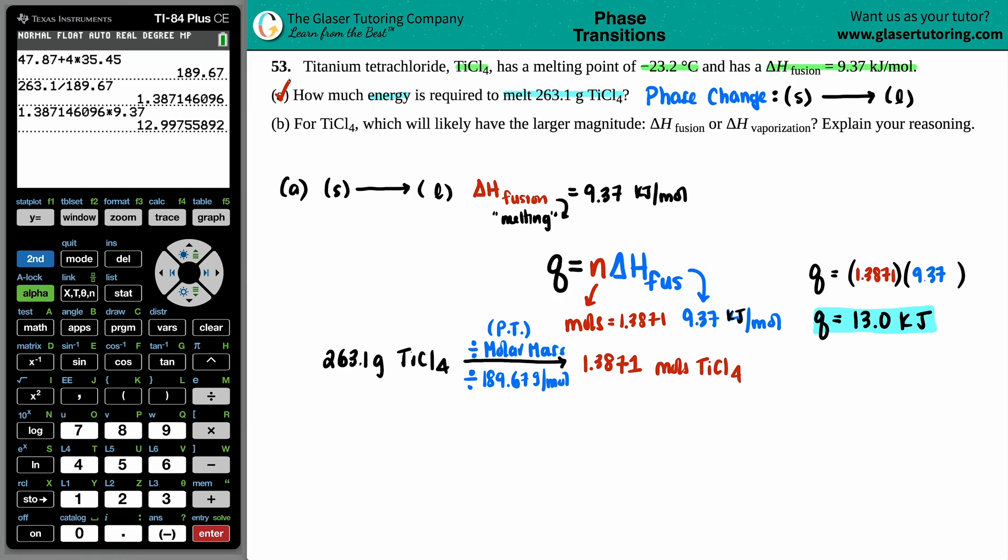Now, I just wanted to point out here that they gave you a melting point, but we didn't use it. They just tried to trick you. They can always give you extra information. But don't tense up when you see that they gave you a number and you didn't add it in here. Sometimes they'll throw you in extra information. Just trust the process and trust the formulas. All right.